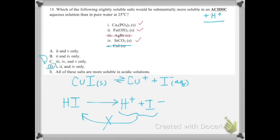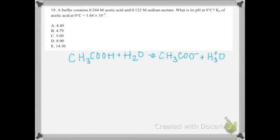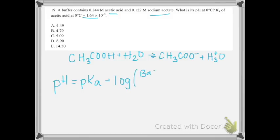For number 19, we have a buffer made of acetic acid and sodium acetate, and they give us the Ka. Buffers resist changes in pH, and we can use the Henderson-Hasselbalch equation specific for them: pH = pKa + log([base]/[acid]).